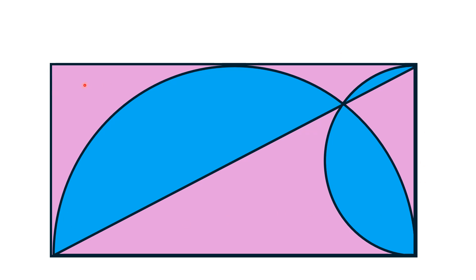There is a rectangle in which two semicircles are given. One is with its diameter equal to the length of rectangle and the other is having diameter equal to the breadth of this rectangle.